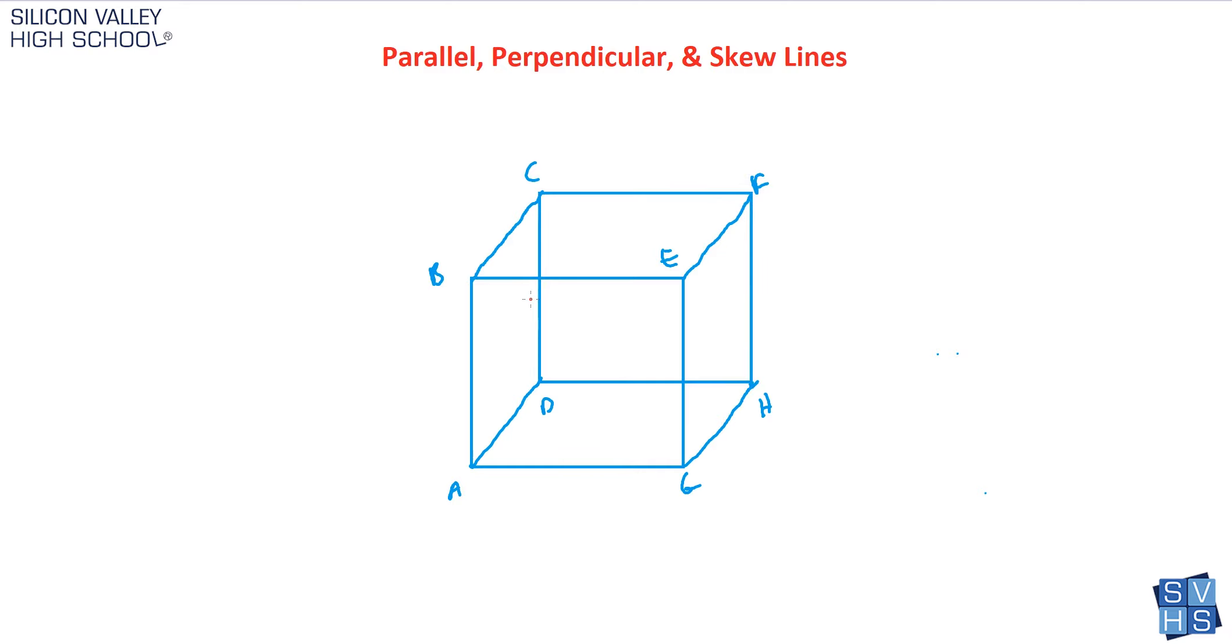The definition of parallel lines is that they are two lines that are on the same plane, but they will never cross. In other words, they have the same exact slope and they'll never cross. An example would be, first of all...